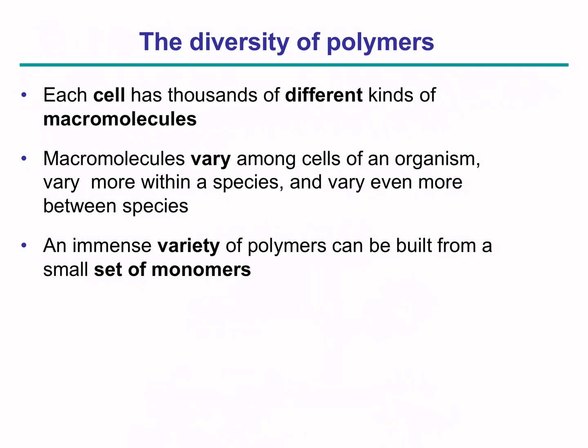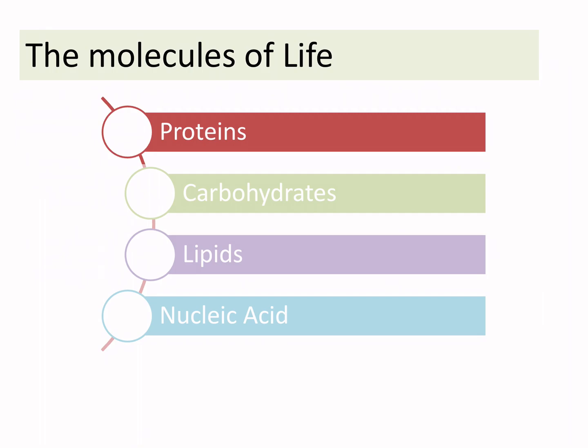Each cell has thousands of different kinds of macromolecules, and these vary between the organism and species, and give rise to multiple different plethora of functions. The immense variety of the polymers can come up because different monomers can combine with each other in different formats. For example, the English language has a particular set of alphabets, and they come in different combinations, giving rise to language — that's similarly what happens in this case.